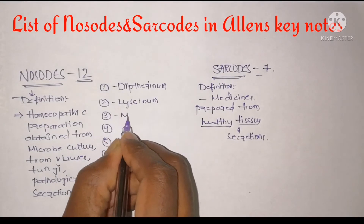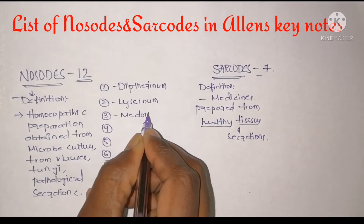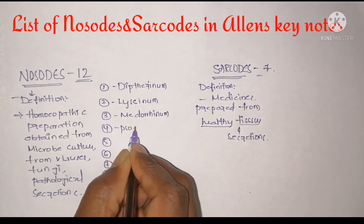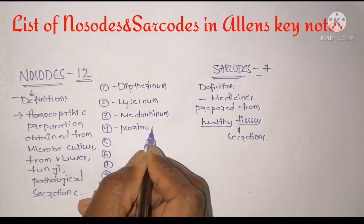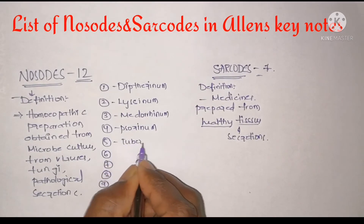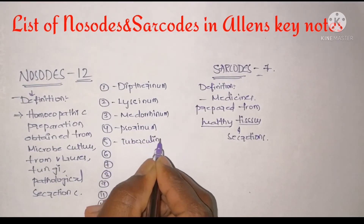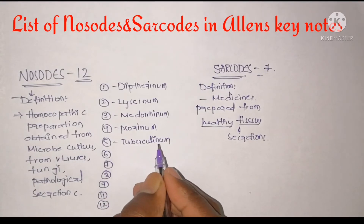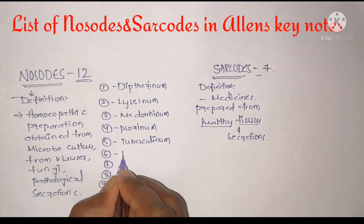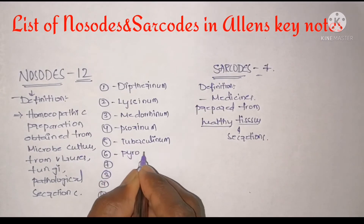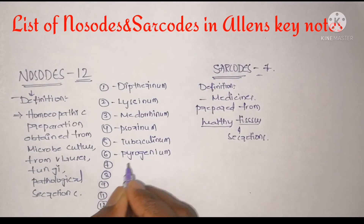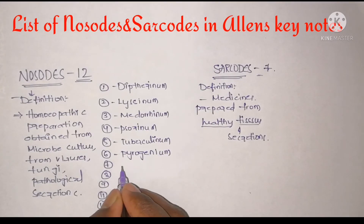The 12 nosode remedies in LNSK notes are: first, Diphtherinum; second, Lysinium; third, Medorrhinum; fourth, Sorinum; fifth, Tuberculinum; sixth, Pyrogenum.